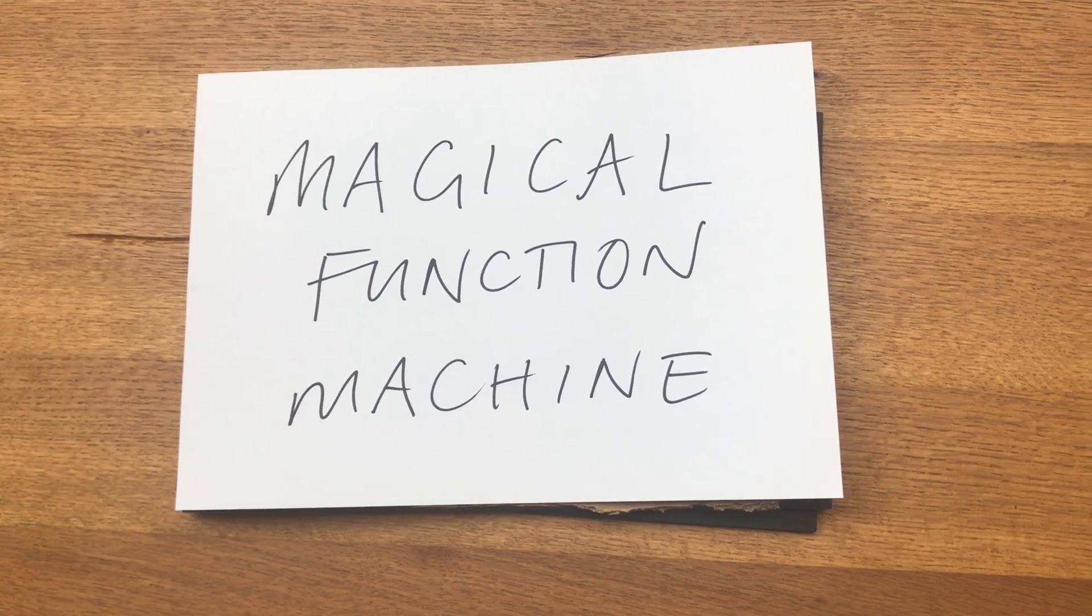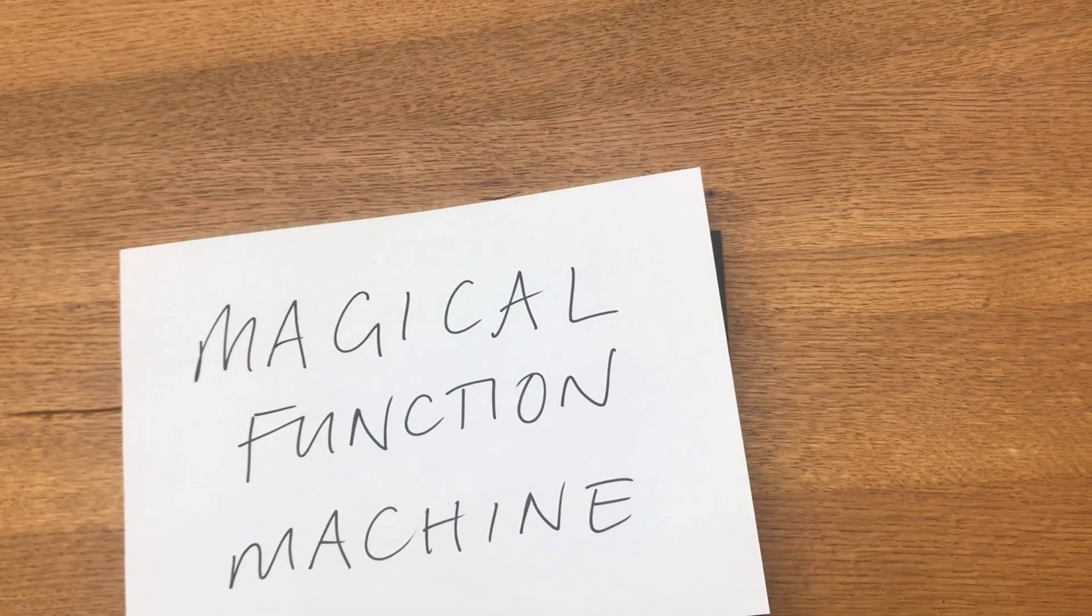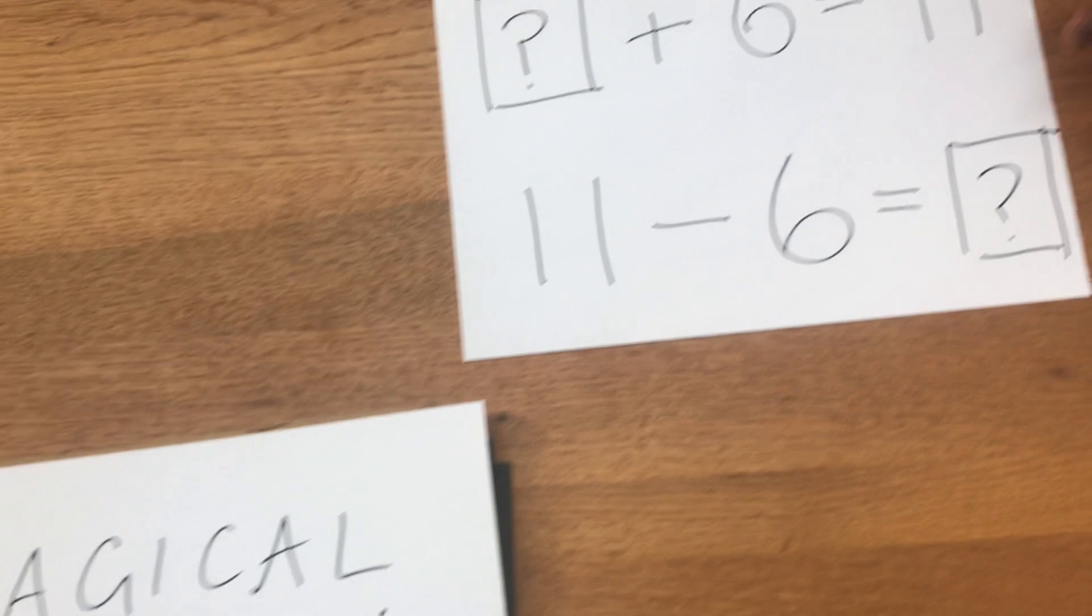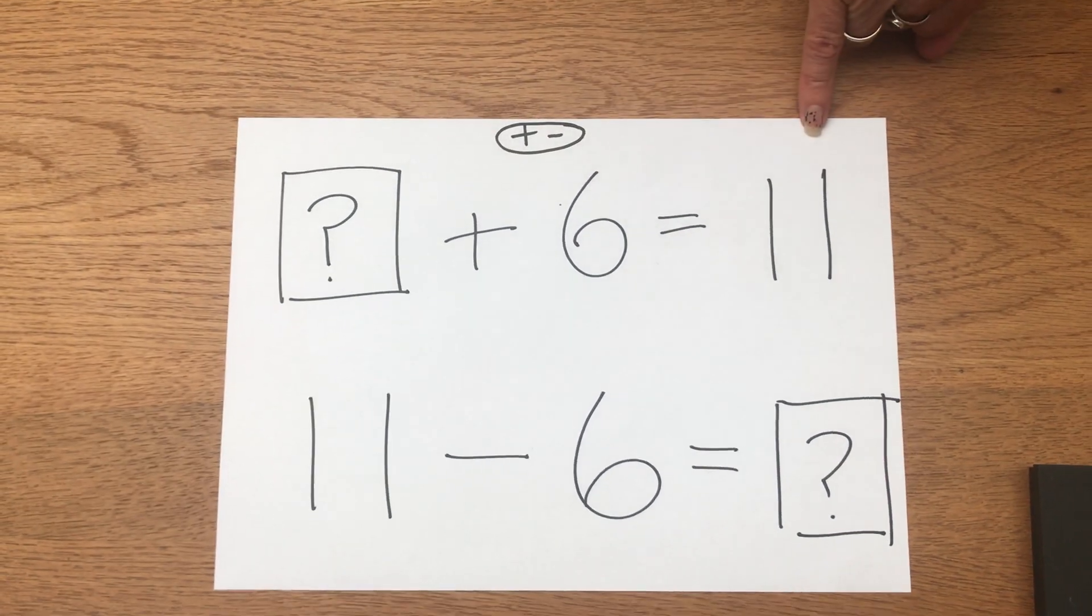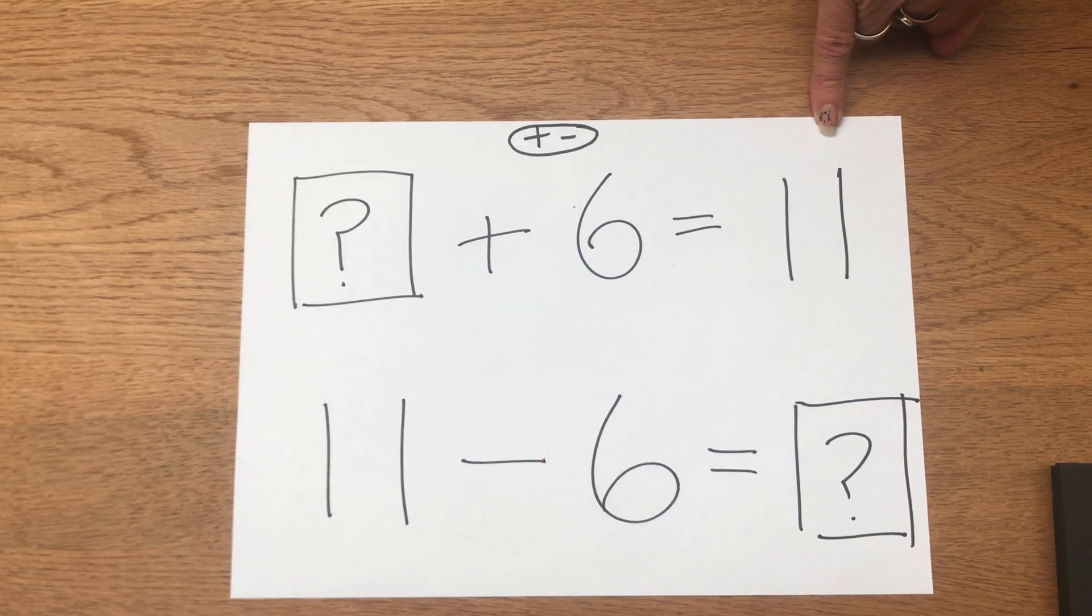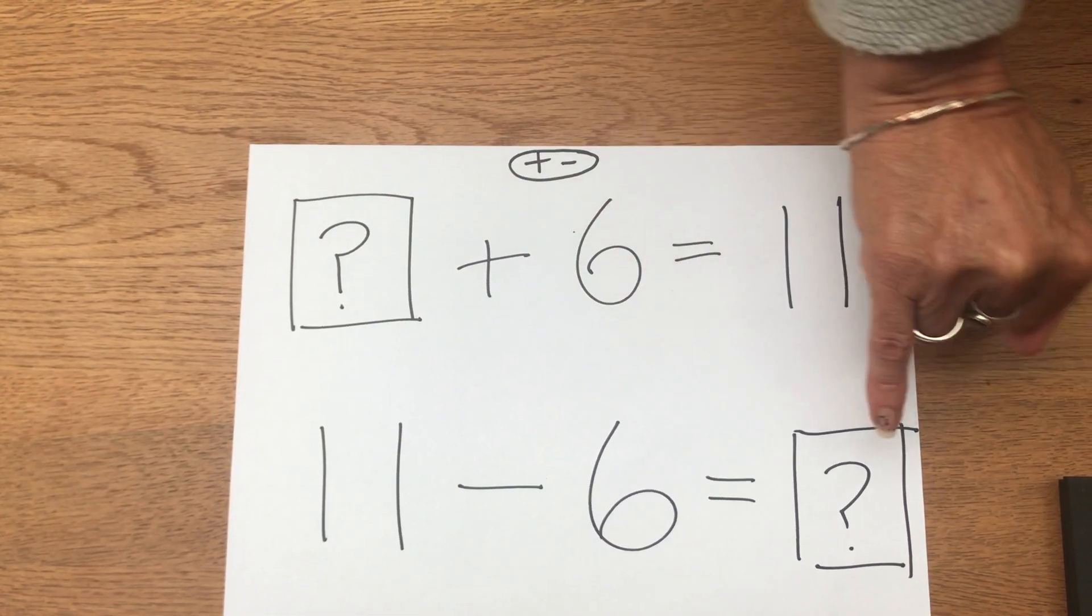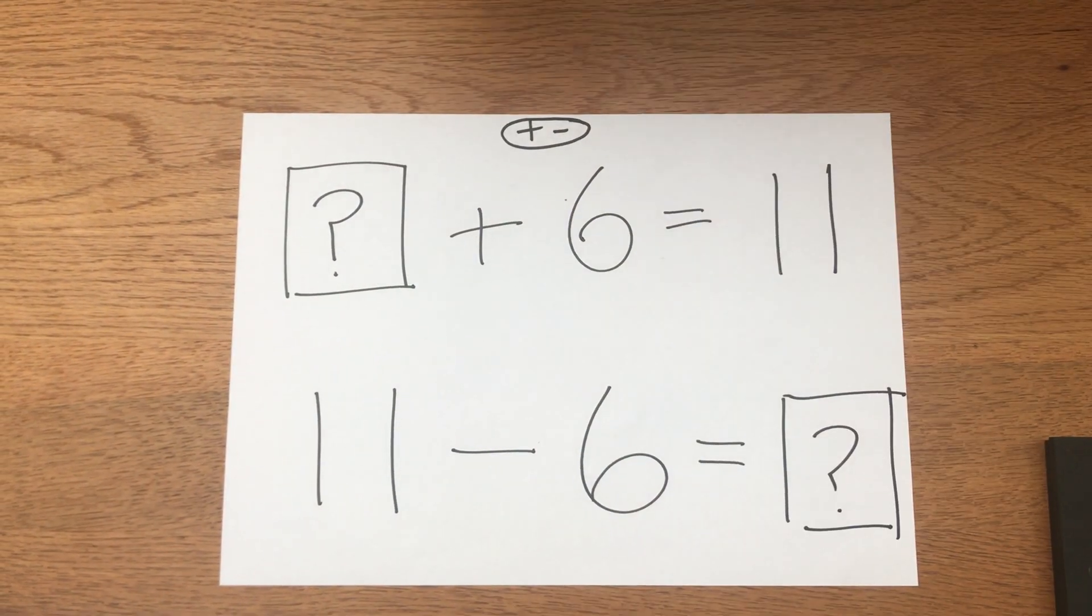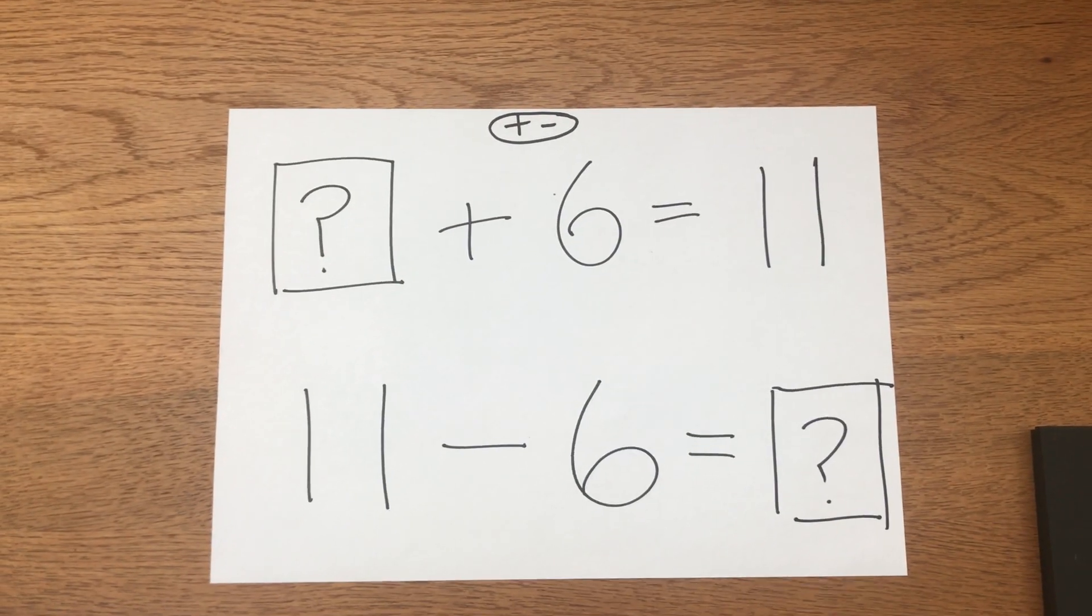So our possible equations are: the input add six is equivalent to 11, or 11 take away six gives us our input. So here we can clearly see the function machine showing the relationship between the operations.